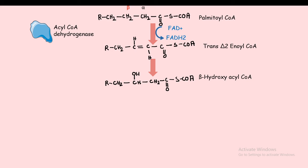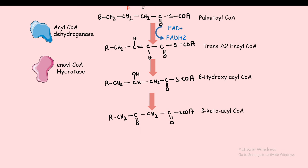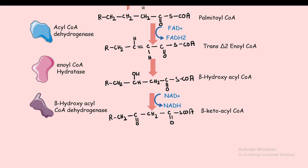From trans-enoyl CoA, it is converted to beta-hydroxyacyl CoA — a hydroxy group is now attached at the beta carbon — and the enzyme is enoyl CoA hydratase. Then beta-hydroxyacyl CoA gets converted to beta-ketoacyl CoA, where the beta carbon now has a carbonyl group, which is even more oxidized than an alcohol. The enzyme is beta-hydroxyacyl CoA dehydrogenase. So there are two oxidation steps in this process, and NAD+ is reduced to NADH. Both NADH and FADH2 will be utilized in the electron transport chain to generate energy.